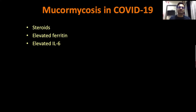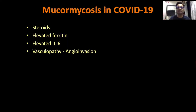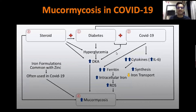In COVID-19, apart from reduced immunity, the cytokine storm theory of COVID-19 severity led to recognition of elevated ferritin and interleukin-6 levels, which were used as biomarkers to follow patient progress. It is actually this elevated ferritin — the increase in iron level — which is further helping in mucormycosis changes. There is also a vasculopathy: endothelial damage occurring due to COVID-19 itself, which further facilitates angioinvasion by mucormycosis. COVID-19 specifically leads to increased interleukin-6, increased ferritin and intracellular iron, contributing to the increased number of mucormycosis cases.